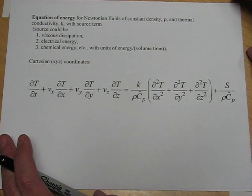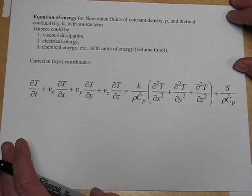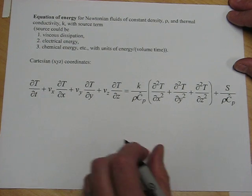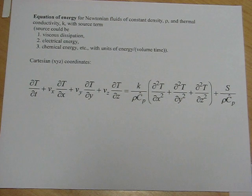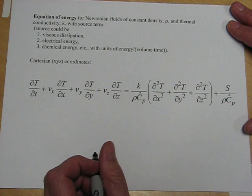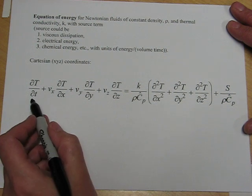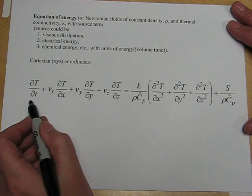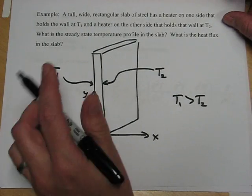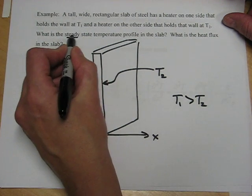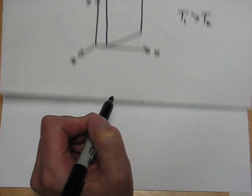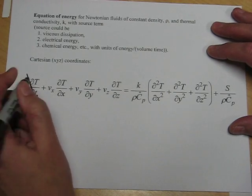This is the microscopic energy balance in Cartesian coordinates. It has a number of terms. And in order to solve this equation, we have to apply our particular problem and simplify this as much as we can. The first term asks, does the temperature change with time? Going back to our problem statement, we see that we're asked for the steady state temperature profile. And at steady state, the temperature will not be changing with time. And therefore, this term goes to zero.